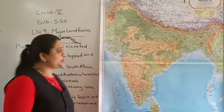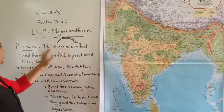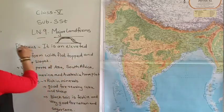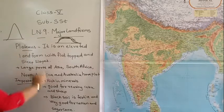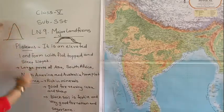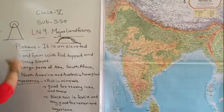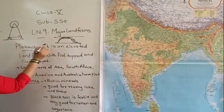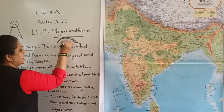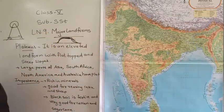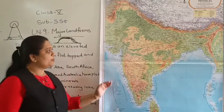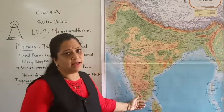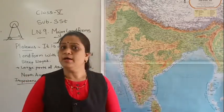Once again — what is plateau? Plateau is an elevated landform with a flat top and a steep slope. Now, a mountain is higher, it has a steep slope, a pointed peak, and a broad base. Whereas a plateau is elevated but with a flat top and a steep slope. I have explained this with the help of our India physical map.